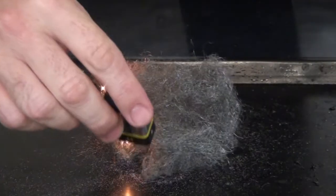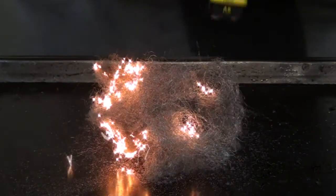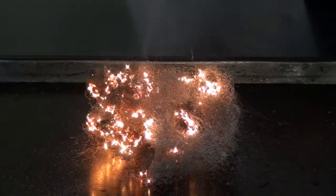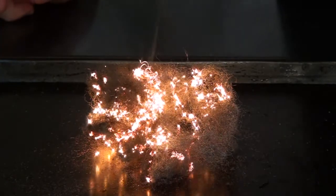Steel wool is mostly made of iron, around about 98%. These iron threads have lots of surface area surrounded by pockets of oxygen.